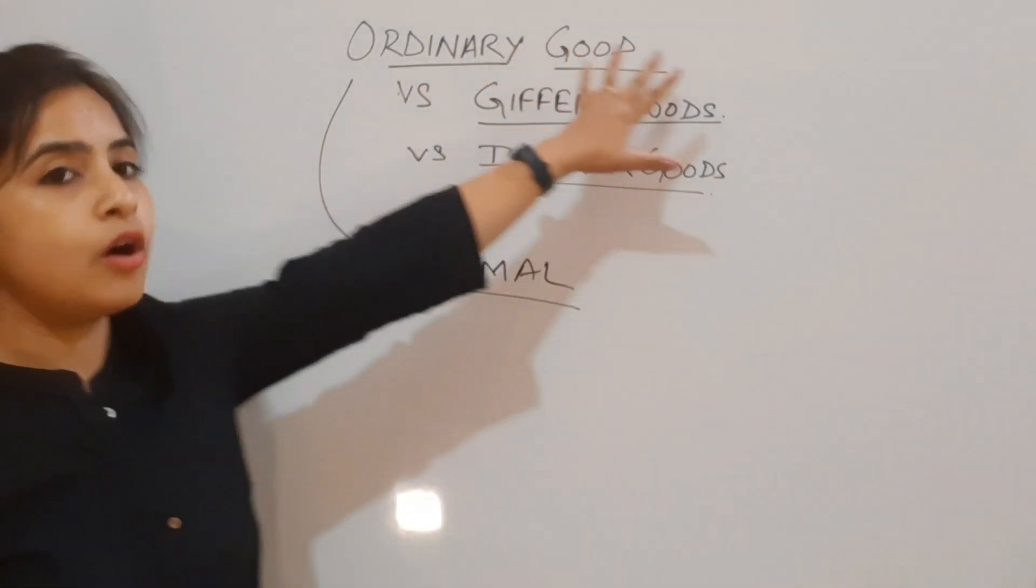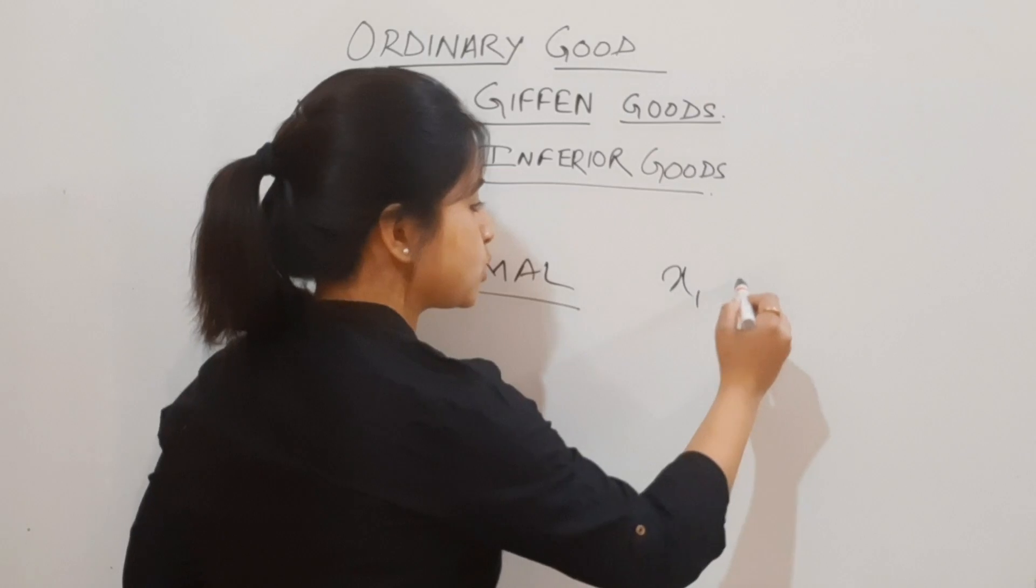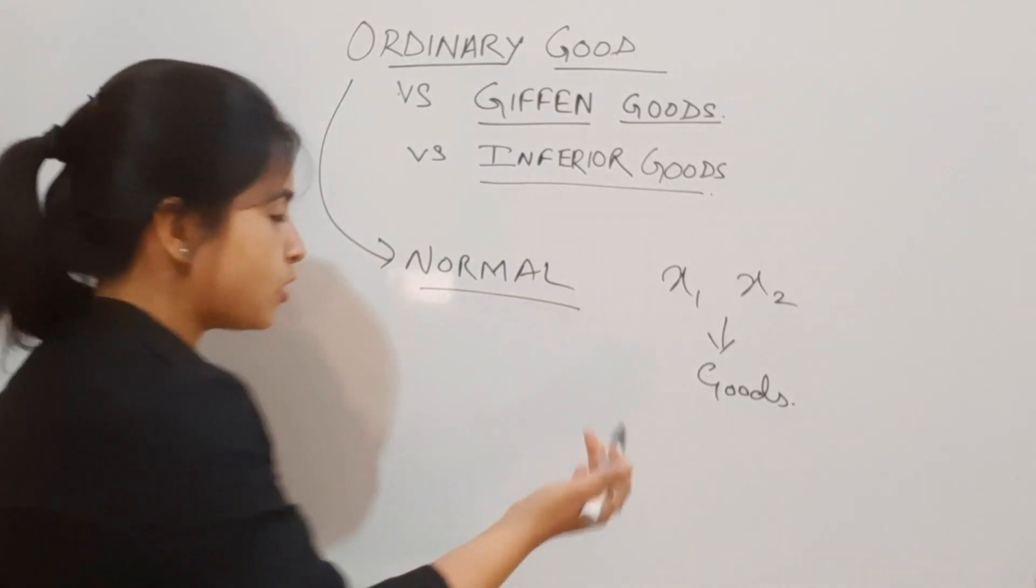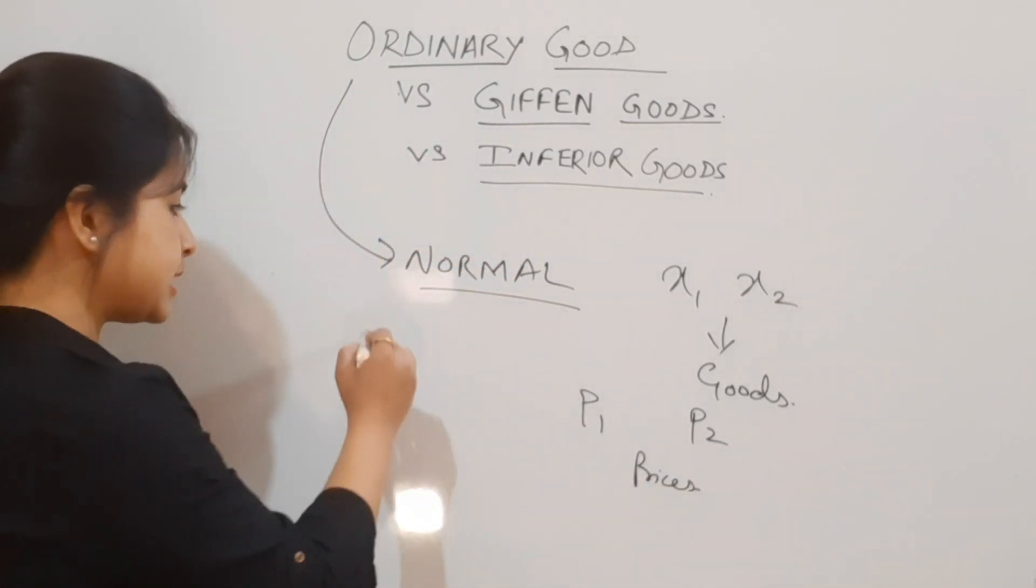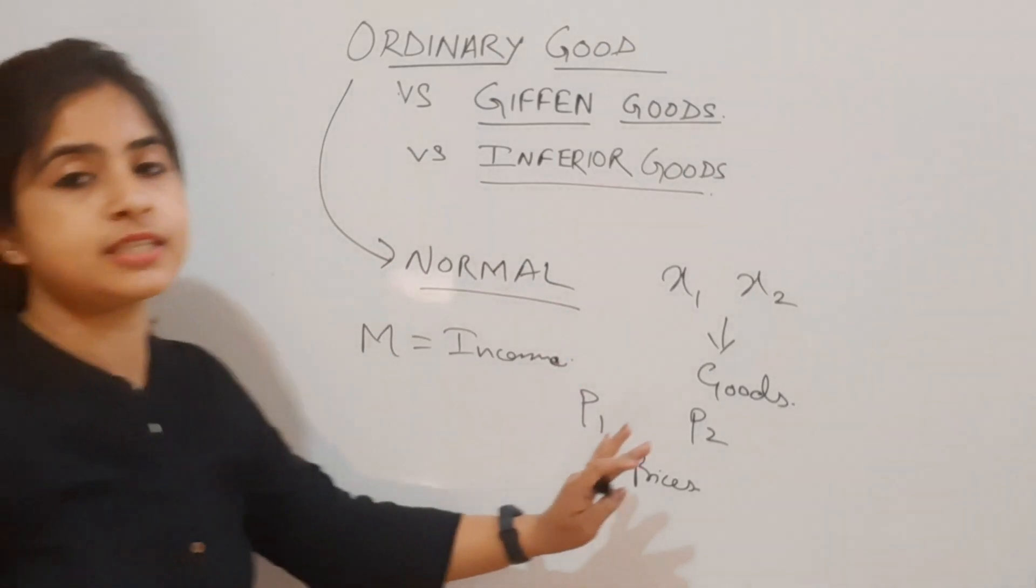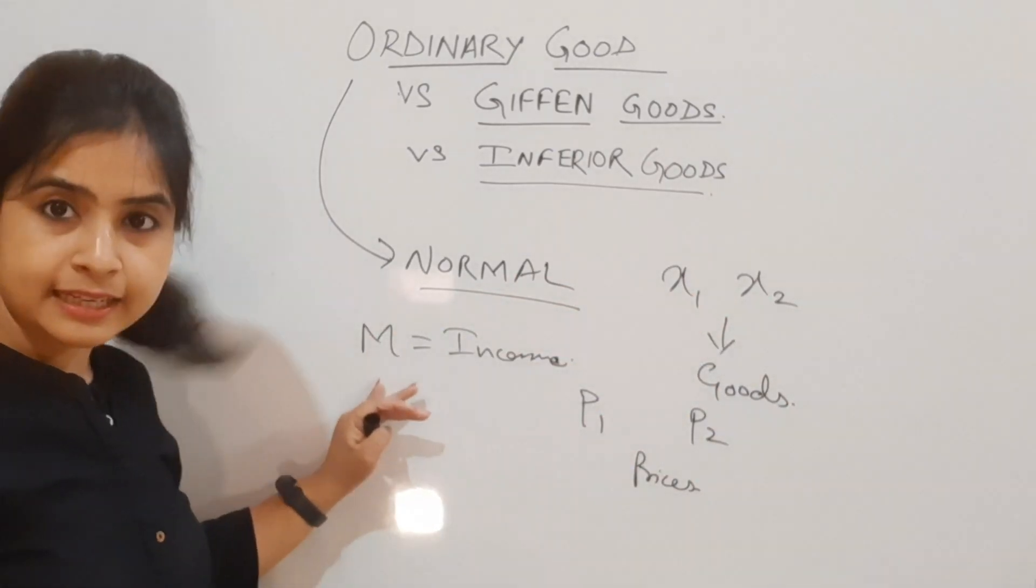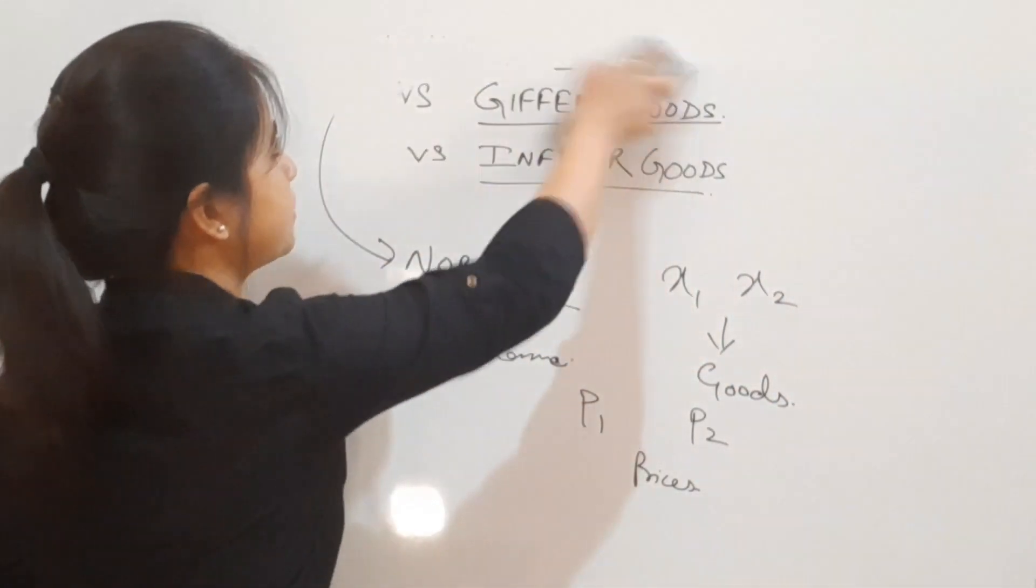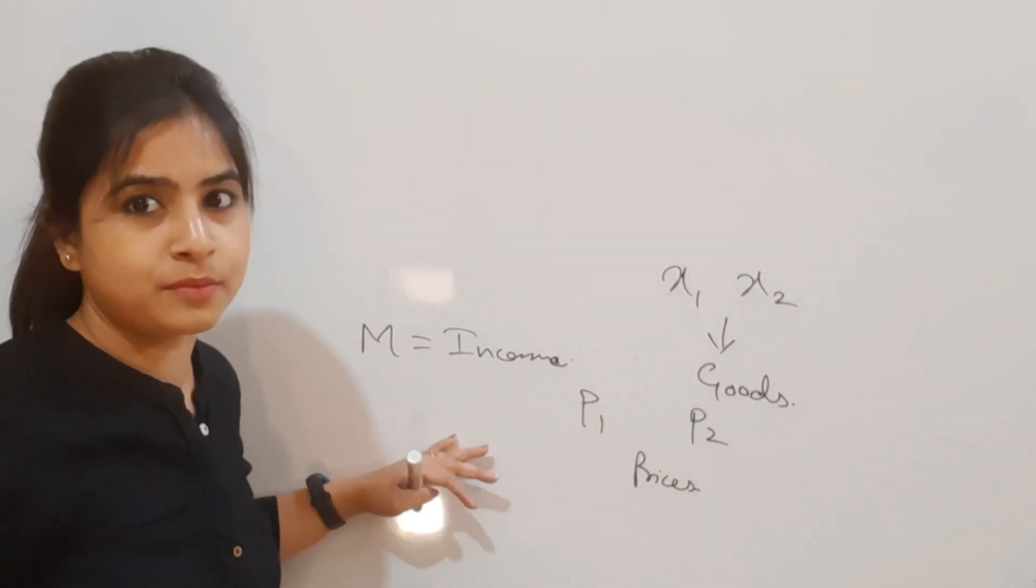For ordinary or normal goods, let's consider a two commodity model: x1 and x2 are the two goods with respective prices p1 and p2. I'm representing income with m. These are the only notations.